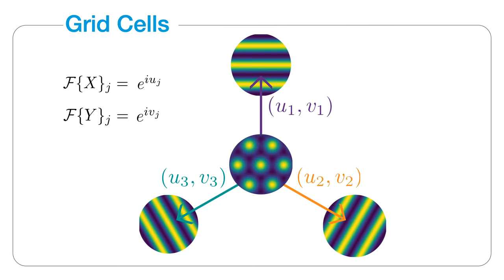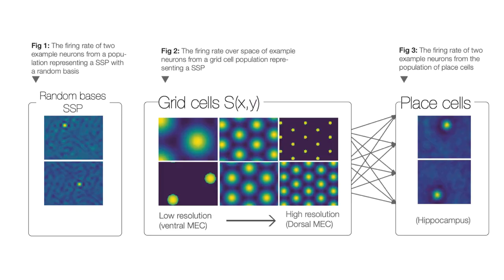We present a method for constructing the basis vectors and encoders that result in a population with a modular organization of grid cells of varying scales and orientations. On the left, we see firing patterns of neurons in a population representing an SSP constructed of random basis vectors. In the middle, firing patterns of neurons representing an SSP when basis vectors as described in the paper are used — this is referred to as the grid cell population. On the right, examples of place cell output decoded from the grid cell population are shown.